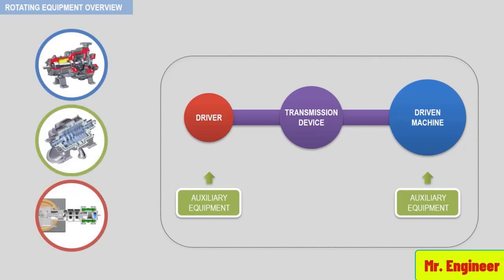The answer is all four. Regardless of the type of unit or train, a driven machine, a driver, a transmission device, and auxiliary systems must always be present. When you are asked to inspect G300 or K100, you are actually inspecting the G300 pump unit or K100 compressor train. Failure to recognize this fact will severely limit your troubleshooting scope and ability.